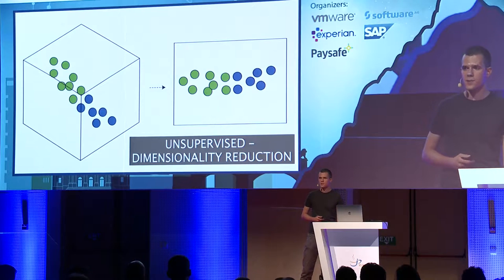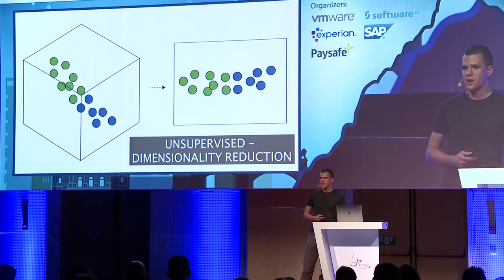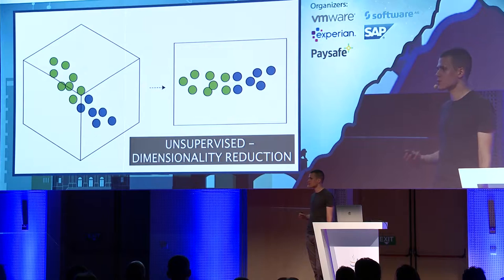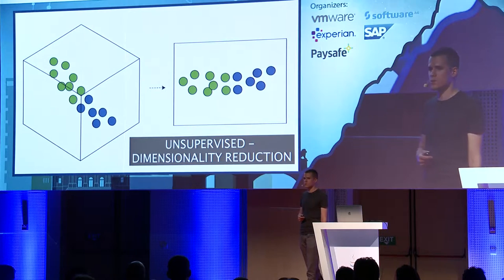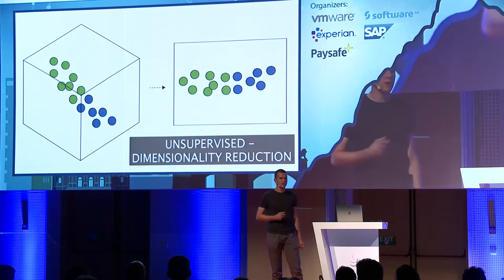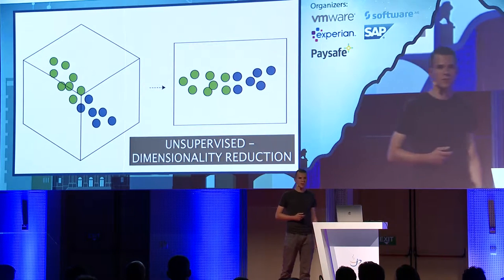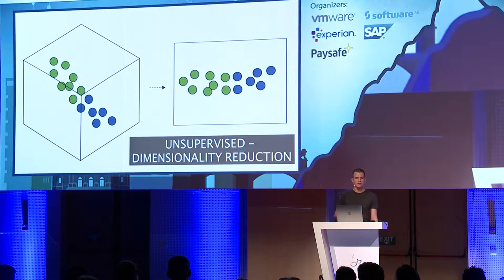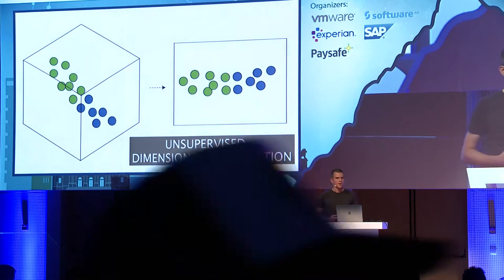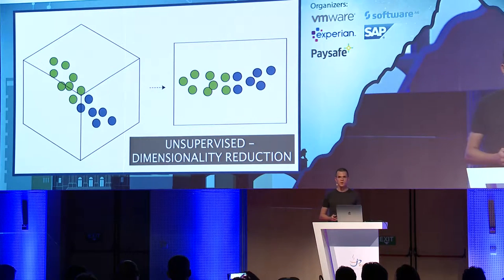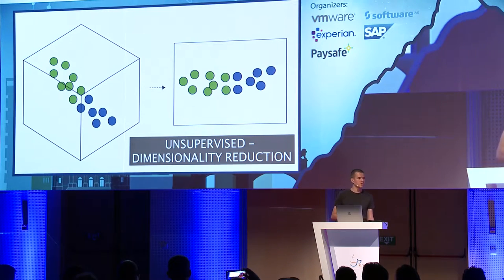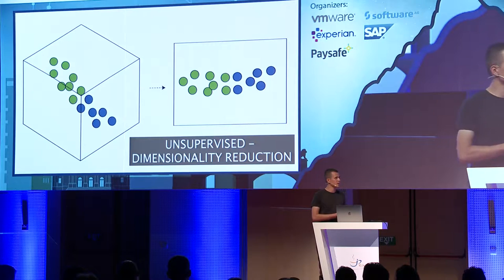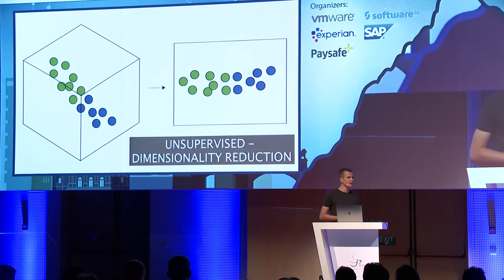Another type is dimensionality reduction. In this type, we want to reduce the number of attributes. So if you have an example described by three numbers — you put it in a three-dimensional coordinate system — then by doing some mathematical transformations it may be possible to map this to a lower number of dimensions, down to just two attributes, without losing anything important.